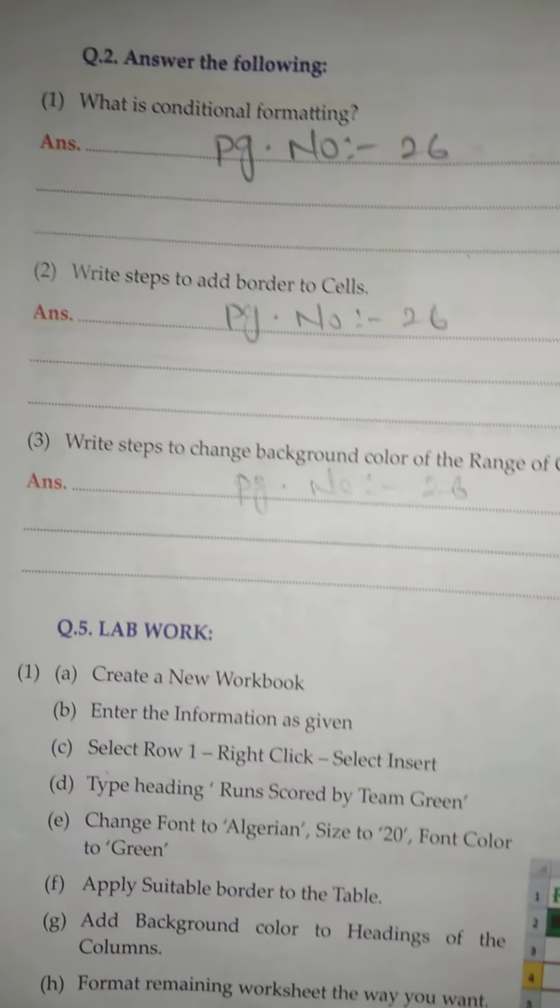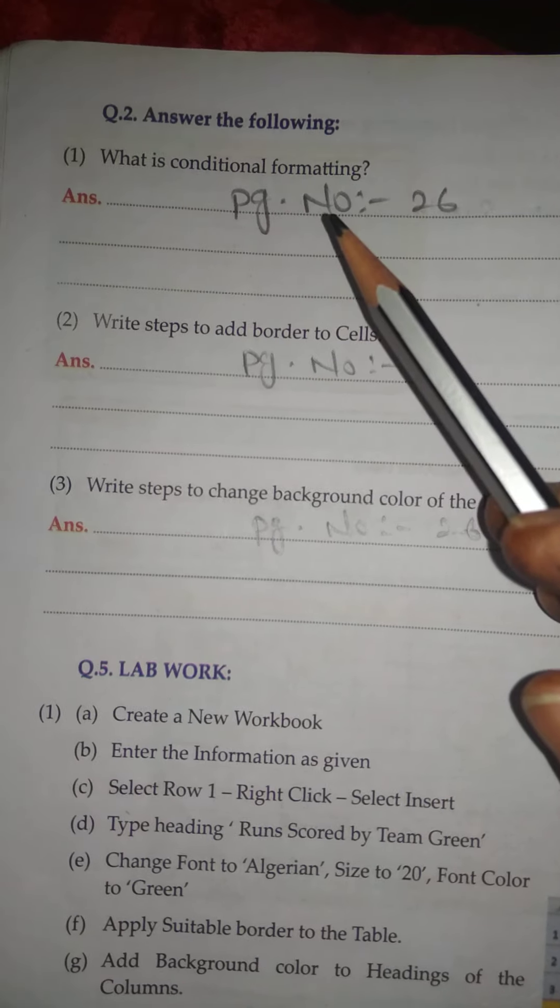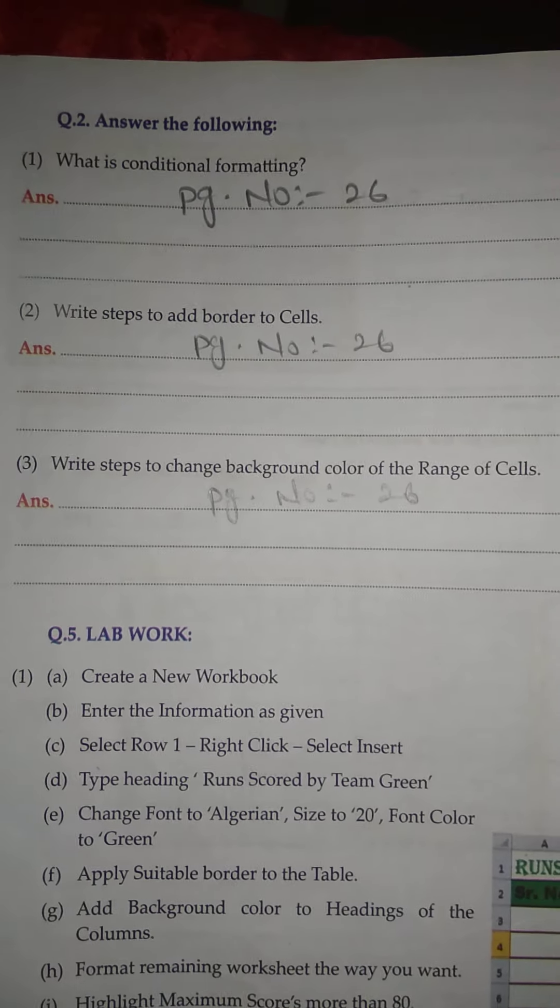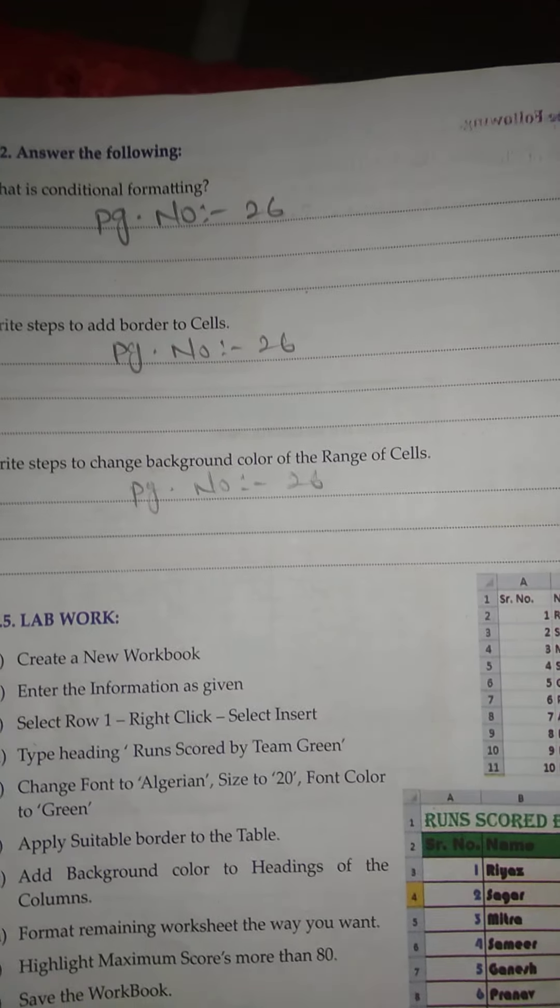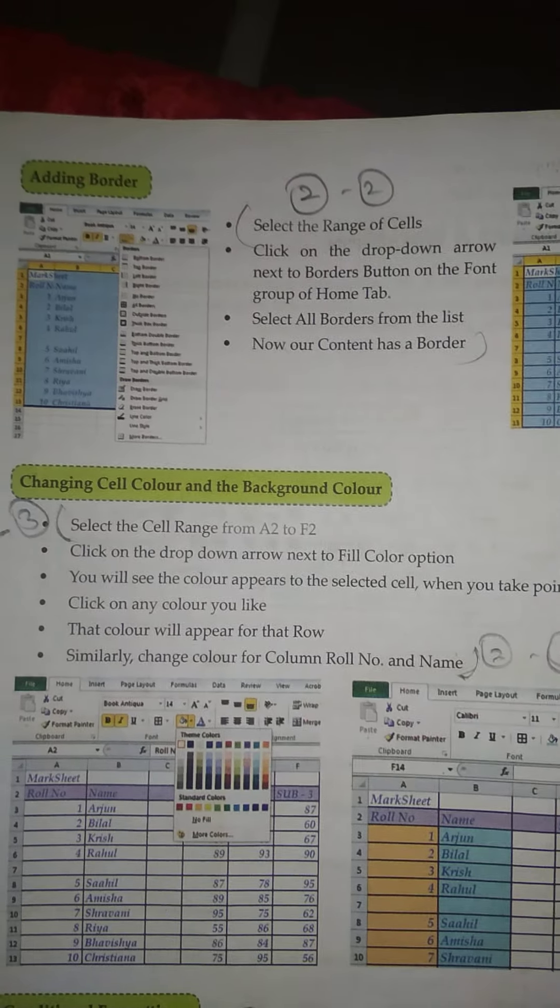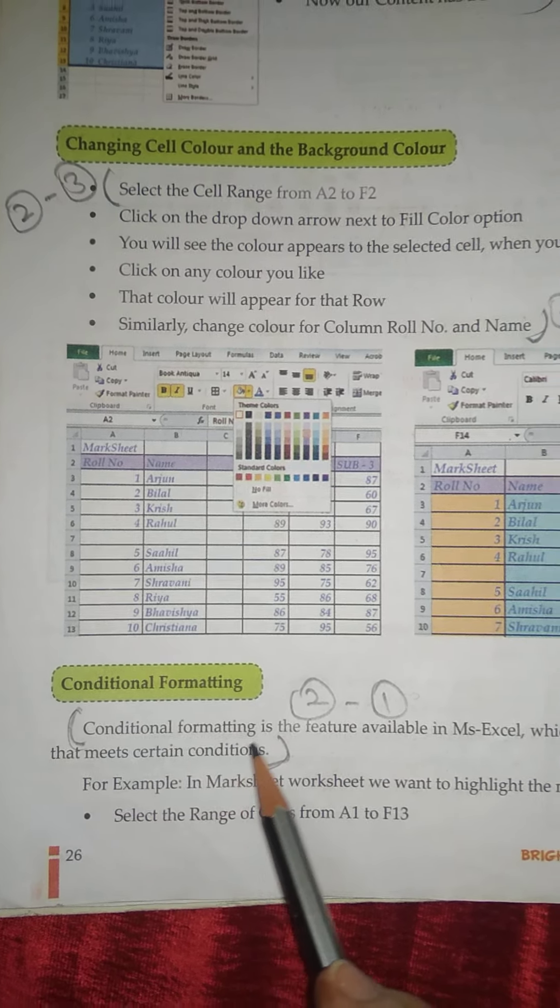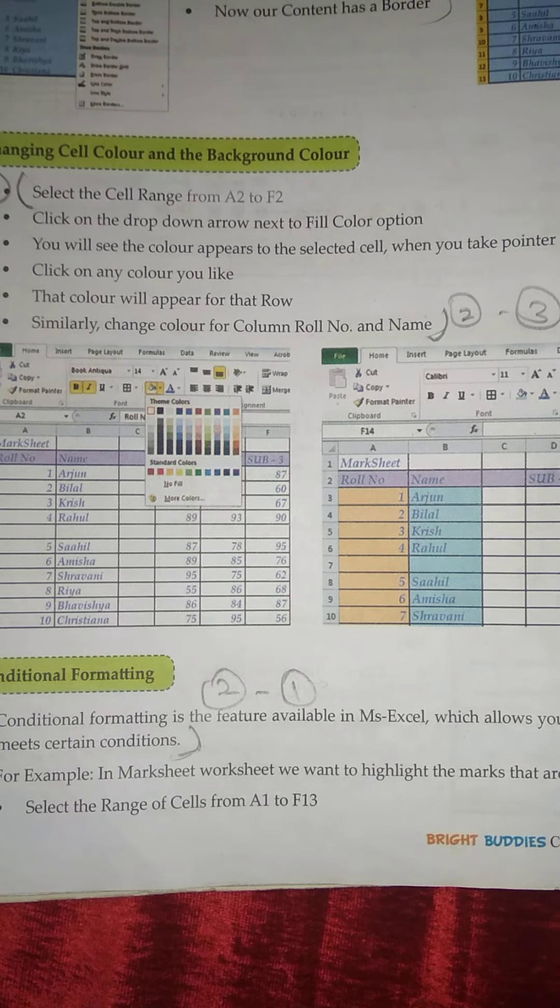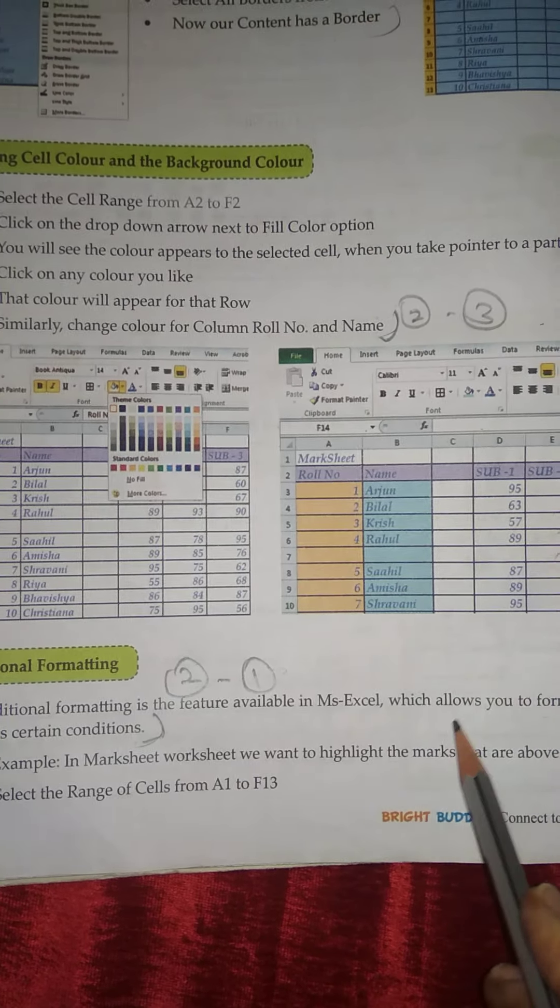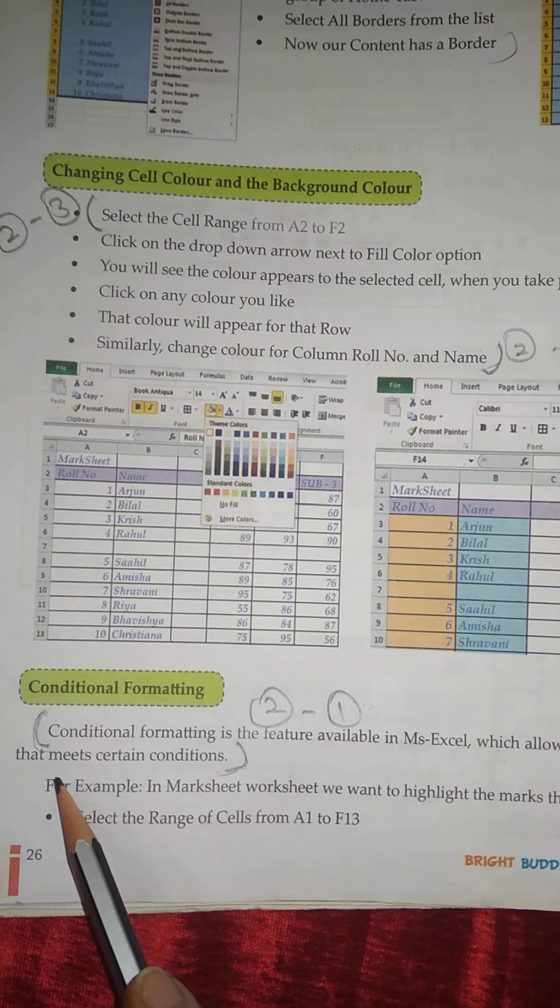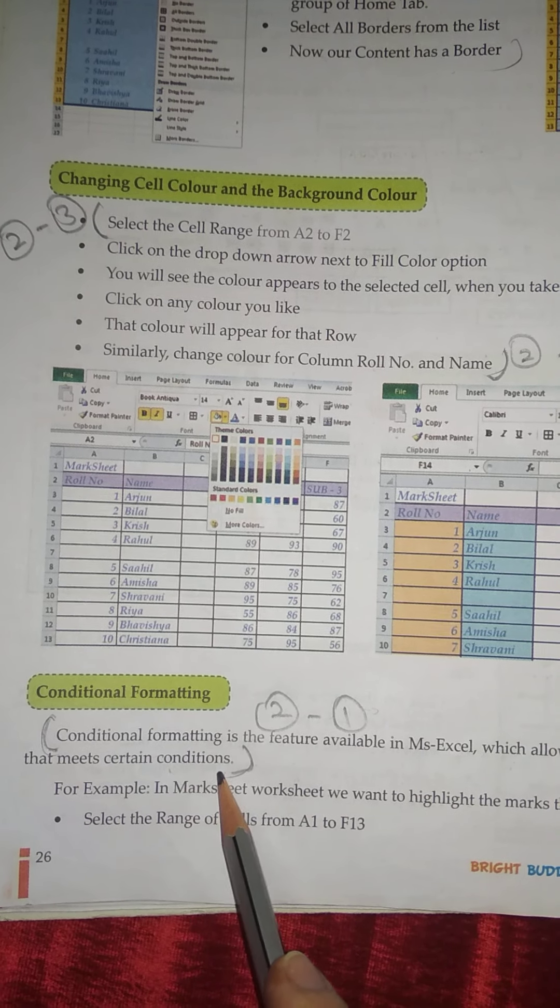Question number two: Answer the following. Number one: What is conditional formatting? Answer is on page number 26. Conditional formatting is the feature available in MS Excel which allows you to format the data that meets certain conditions.